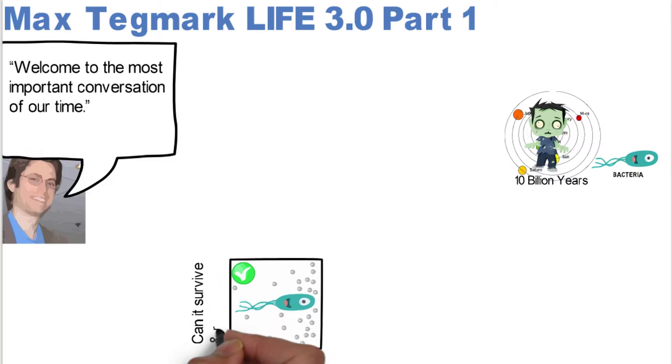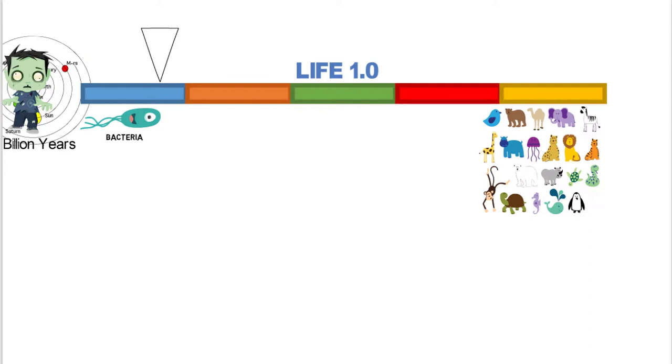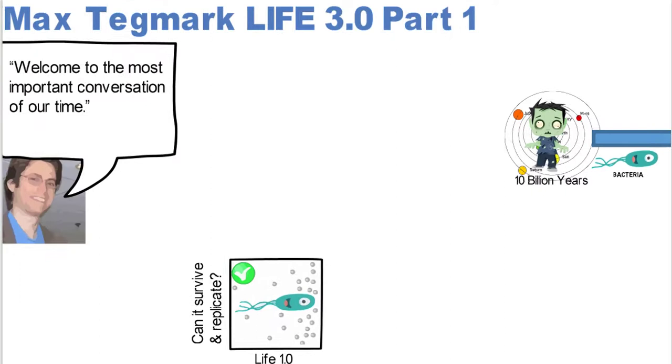So he talked about Life 1.0 in the first part, and he says, can it survive and can it replicate? That's basically the criteria that he's established for Life 1.0. And Life 1.0 really exists for everything from bacteria all the way through to the animal kingdom.